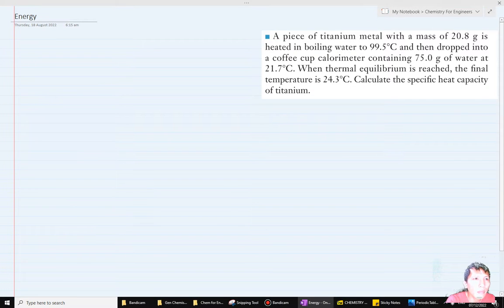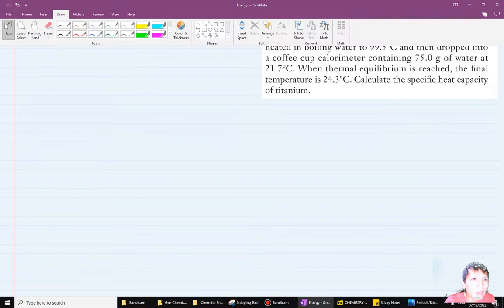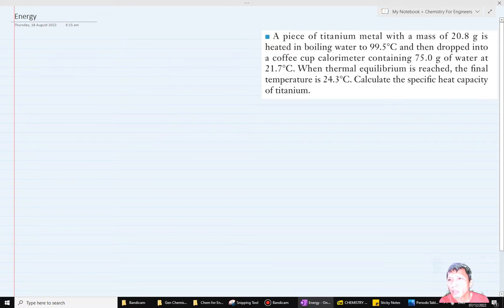We have another calorimetry problem. A piece of titanium metal with a mass of 20.8 grams is heated in boiling water to 99.5°C and then dropped into a coffee cup calorimeter containing 75 grams of water at 21.7°C. When thermal equilibrium is reached, the final temperature is 24.3°C. Calculate the specific heat capacity of titanium. First we have to set up the equation for titanium and water because there are two systems involved.